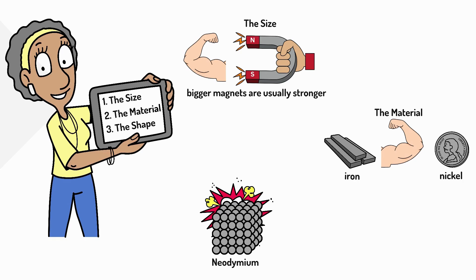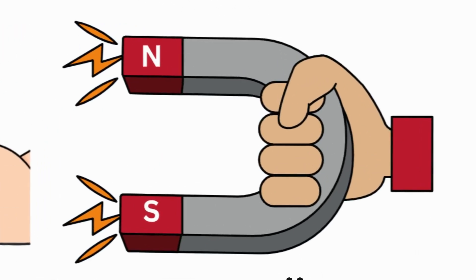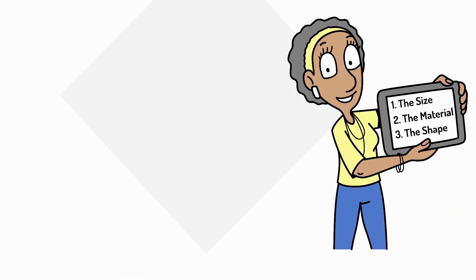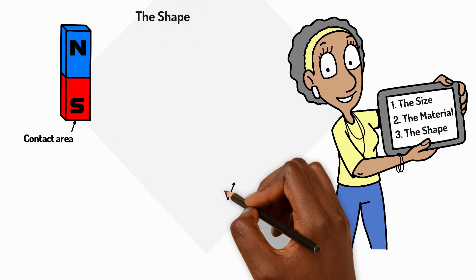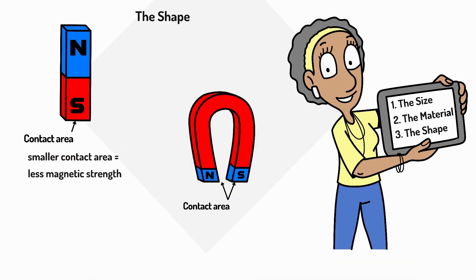And thirdly, shape. The more pole area exposed, the stronger the magnet is. Magnets are strongest at their poles, the north and south ends. The shape of a magnet changes how much of its poles can touch an object, affecting how strong it seems.